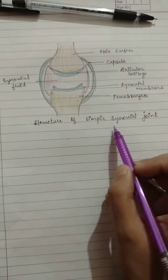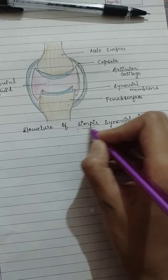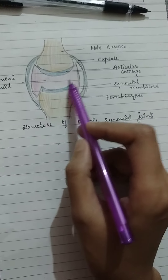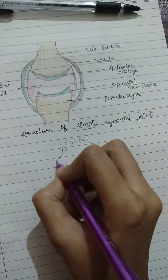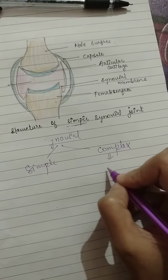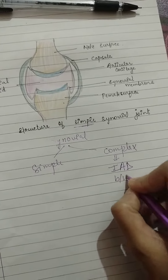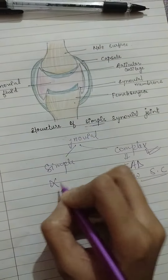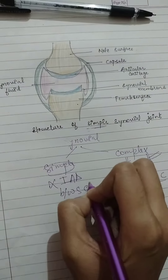This is a simple synovial joint. It is called simple because there is no inter-articulating disc between the synovial cavity. There are two types of synovial joint: simple and complex. If there is an inter-articulating disc between the synovial cavity, it is called a complex synovial joint. If there is no inter-articulating disc, it is called a simple synovial joint.